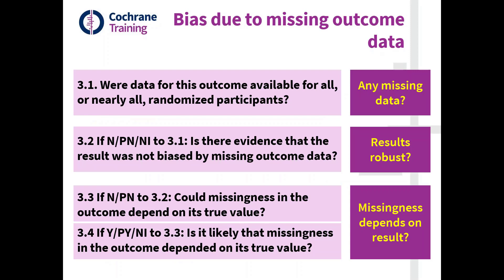Let me show you what the questions are that explicitly target those issues on that slide. We first ask whether outcome data were available for all or essentially all of the participants randomised. If that's not the case, we ask whether there's evidence that the result was not biased, which would be from sensitivity analyses by and large. If that's not the case, then we ask in two levels: the easier question — could missingness depend on its true value? — and if it could, is it likely that missingness in the outcome depends on its true value? So there are only four questions that try and capture all of the things that we dealt with.